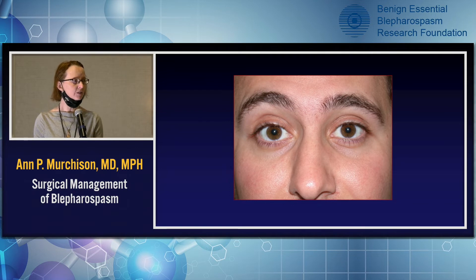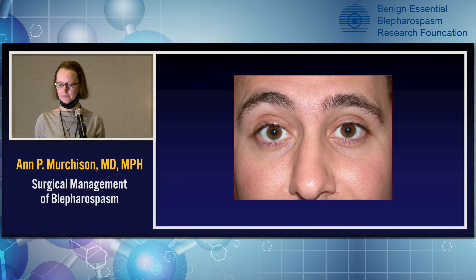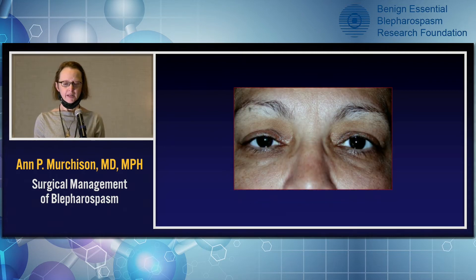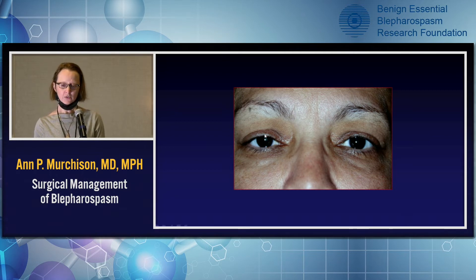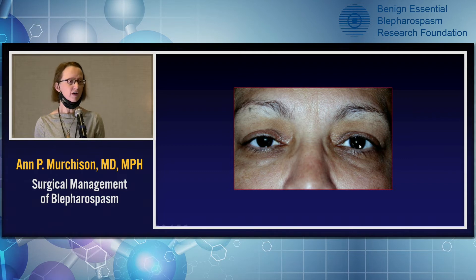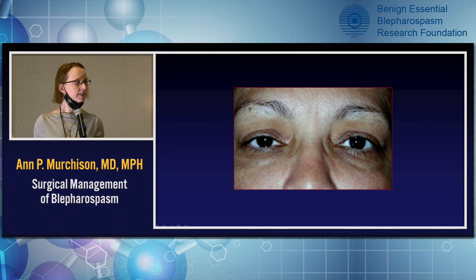Here we see a patient looking straight ahead, and then on activation of the frontalis muscle, it not only lifts the brow but has a small role in actually lifting the lid as well. Here's another patient demonstrating what happens when Mueller's muscle doesn't work — on the patient's right side it's a little bit lower because Mueller's is not working. Mueller's does provide a small amount of lift, not as much as the levator, but it is one of the openers of the lid.